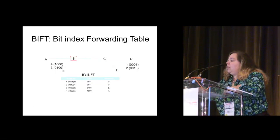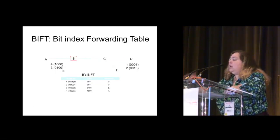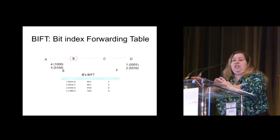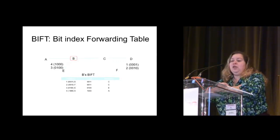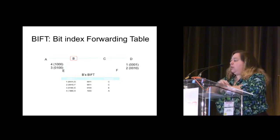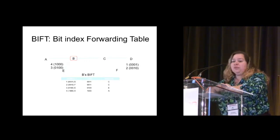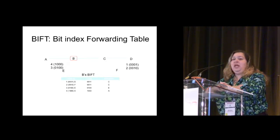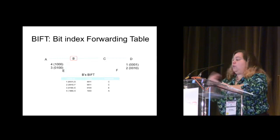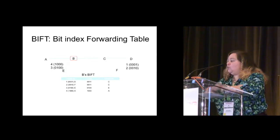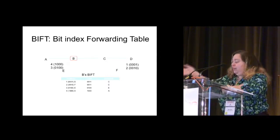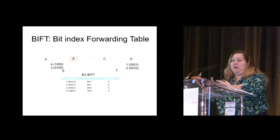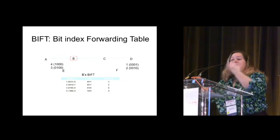Here's an example. A bit's been assigned: D is 1, F is 2, E is 3, A is 4. And B wants to send traffic. If B wants to send traffic to D and F and A, B is going to look at its bit index forwarding table. It'll say: I'm going to look at the first bit, which is D. I'm going to send it off to my neighbor C, and that's going to take care of also sending it to F. Then I only want to send it to A — that's the only bit that's left set. So I'll ship it directly to A. You duplicate it.